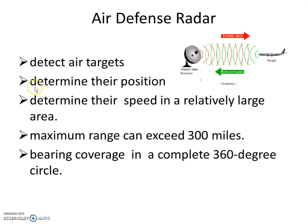It also determines their position — meaning where that aircraft is exactly located — what is the range, what is the position, what is the angle. We get this information through the radar. It also determines the speed over a relatively large area, meaning at what speed that object is moving can also be detected.